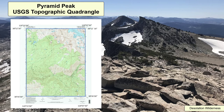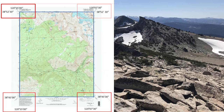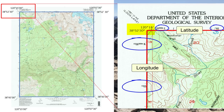Pyramid Peak is in the Desolation Wilderness in California. The borders of USGS quadrangles are latitude and longitude lines. We can identify the value of those lines by studying the corners of the quadrangle. Here in the top left corner we see a vertical longitude line and a horizontal latitude line, and their corresponding measurements, identified from the numbers here by their location and units. The rest of these numbers are part of a national grid or state plane coordinate system, which we are not going to discuss or use in this tutorial.